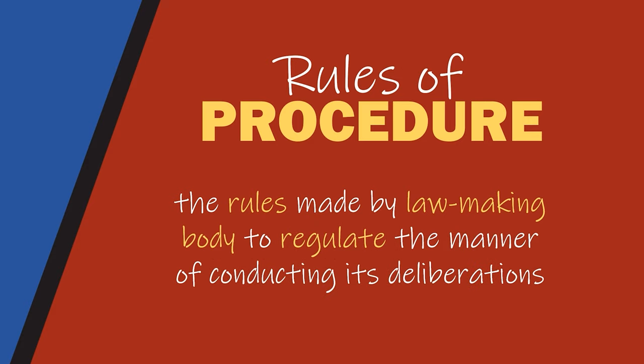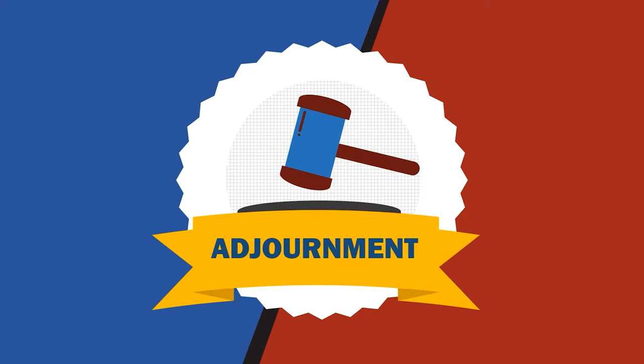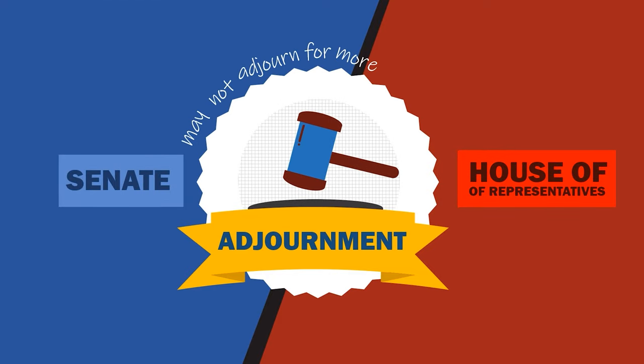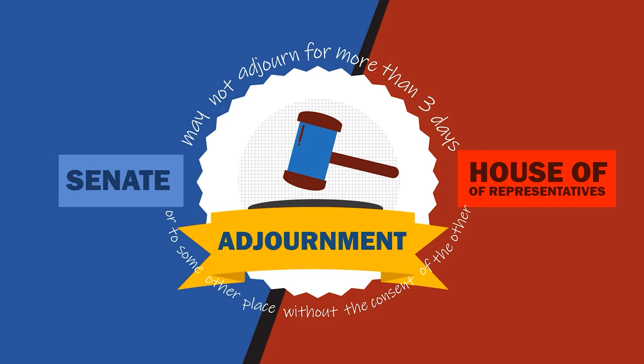Next, rules or procedures — these are the rules made by lawmaking bodies to regulate the manner of conducting its deliberations. The election of officers and penalties to be imposed on members are some of the subjects of the rules of procedure. Lastly, regarding adjournment: during sessions of Congress, either house may not adjourn for more than three days or to some other place without the consent of the other. This rule prevents either house from delaying the work of legislation.